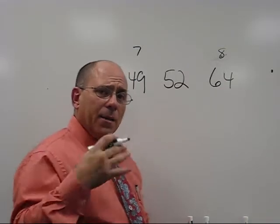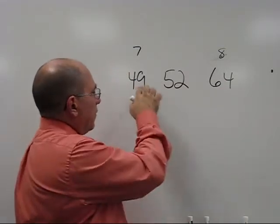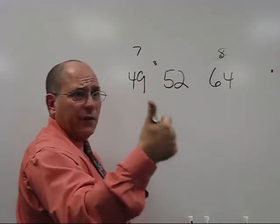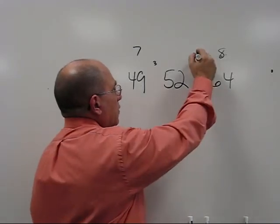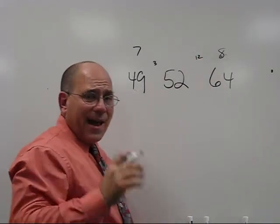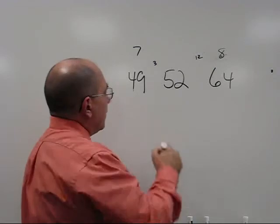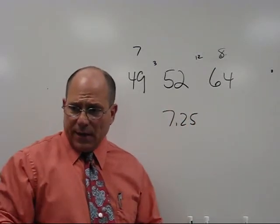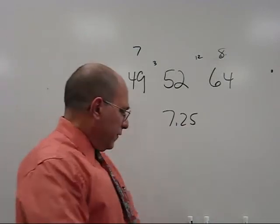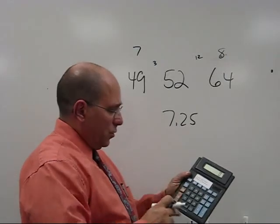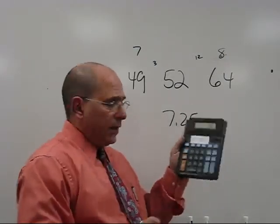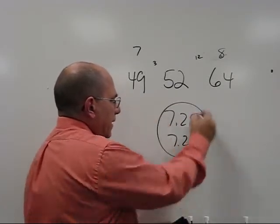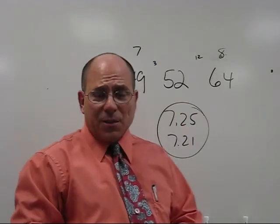They can ballpark it by noting that from 49 to 52 is three digits, while 52 to 64 is 12 digits. I can safely say this is about 7.25, or 7 and a quarter. Now, if we wanted to find out exactly, you'd use a calculator - hit the square root symbol and you'd find 7.21. That's a pretty good estimation.